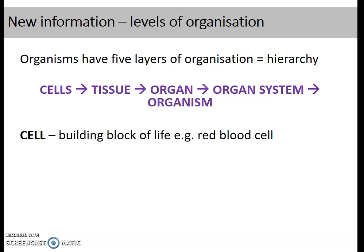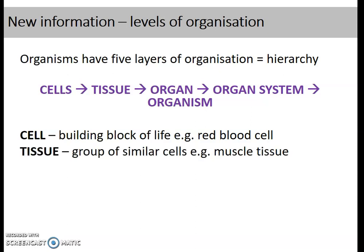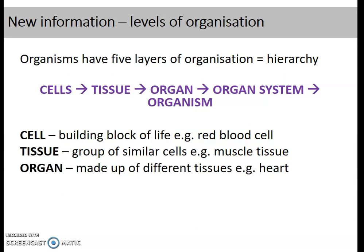A cell is the building block of life. Examples include red blood cells and muscle cells — there are different types of cells in your body. Similar cells group together to make a tissue; for example, muscle cells group together to make muscle tissue. An organ is made up of different tissues. The heart, for instance, contains muscle tissue and red blood cells — different types of tissue make it up.